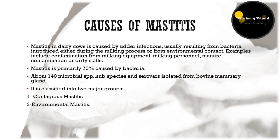Mastitis occurs due to udder infection. Mostly the causes are bacterial infection that results due to contamination during milking or through the environment. About seventy percent of infections are bacterial, twenty-eight percent causes are unknown and include some physical causes like trauma and weather extremes, and two percent are yeast and mold infections.